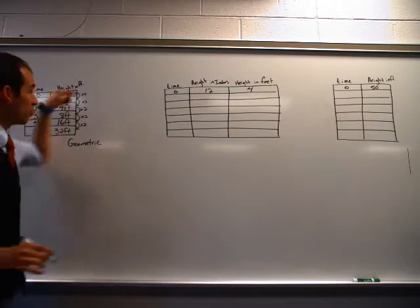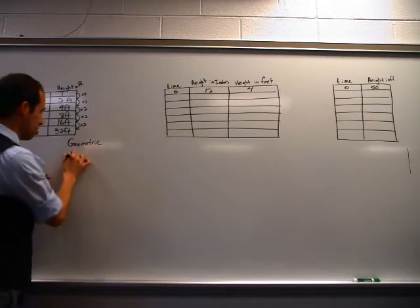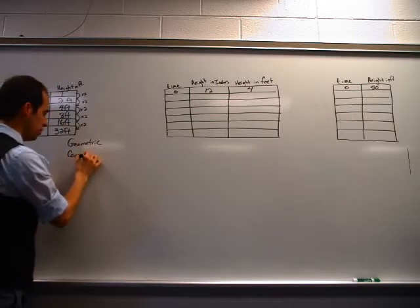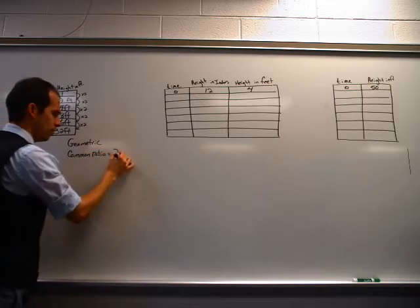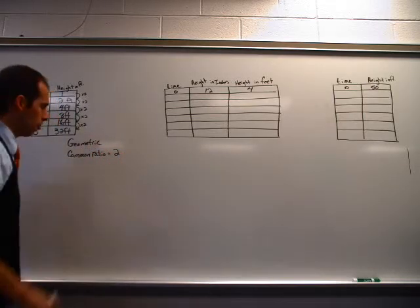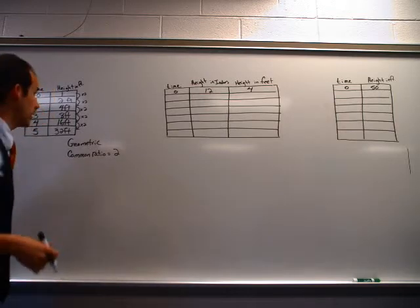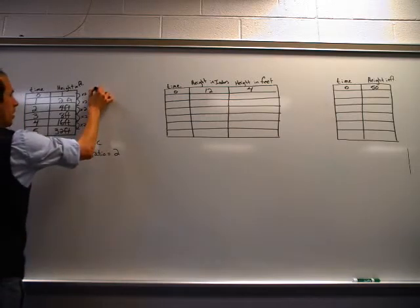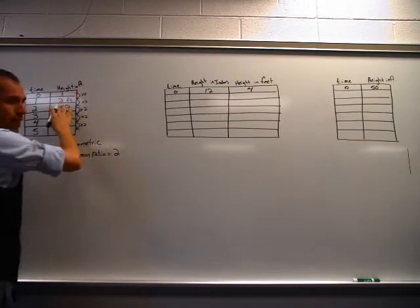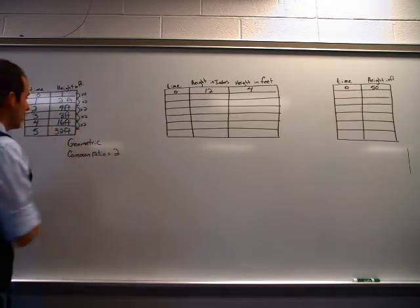And because we're multiplying by two, two is going to be our common ratio. So what does this have to do with anything? Well, check this out. At zero time, I have one foot. Well, that doesn't make too much sense now, so we're going to skip it.